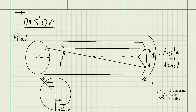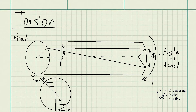Looking at the cross section, here is the shear distribution. As you can see, the further you get out from the radius, the higher the shear stress actually is. Once you're at the center — what we call the neutral axis — you have absolutely no shear stress, and then on the other side it's the exact opposite direction of shear stress.